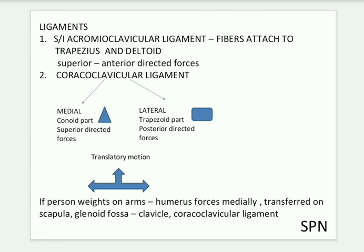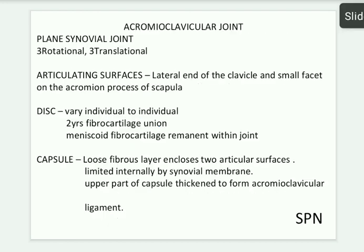When a person is bearing weight on their arms, the weight of the humerus creates forces that transfer through the scapula glenoid fossa, then to the clavicle, and finally reach the coracoclavicular ligament. These are the key anatomical points of the acromioclavicular joint.